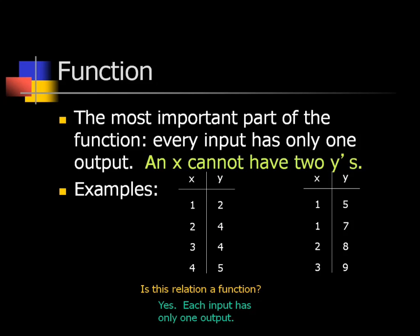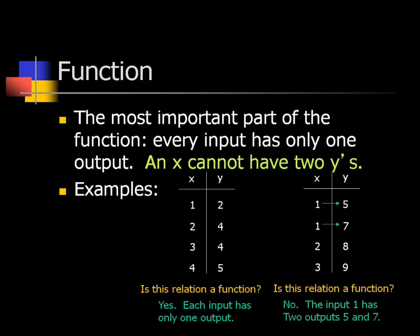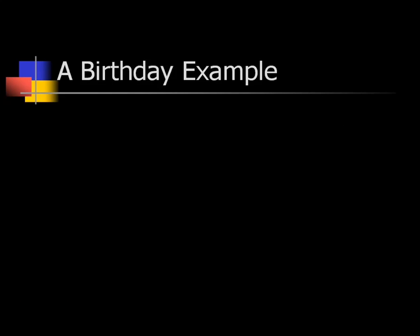In this other relation, though, 1 goes to 5 and 1 goes to 7. See how 1 has two different outputs? If I put in 1, one time I got 5 and one time I got 7. This is not a function because that x-value has two different y-values. That one would not be a function.